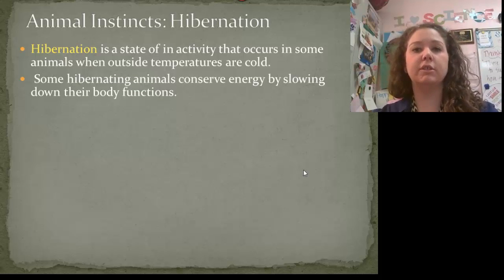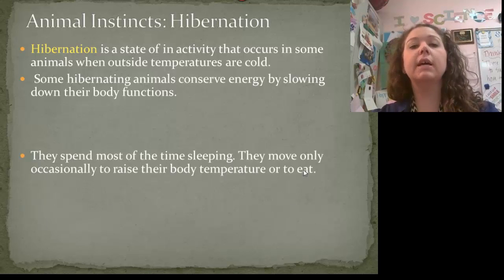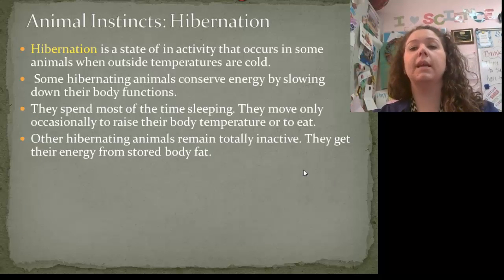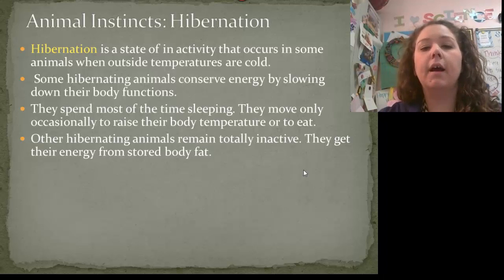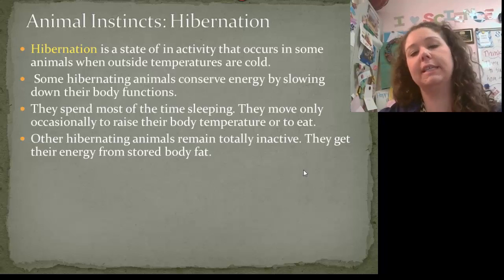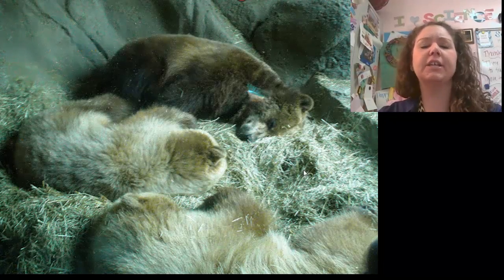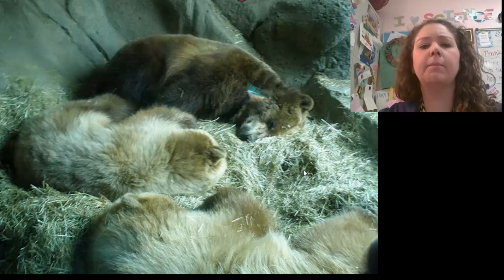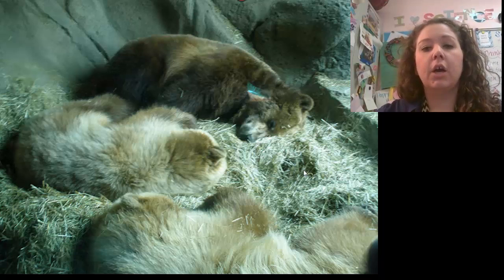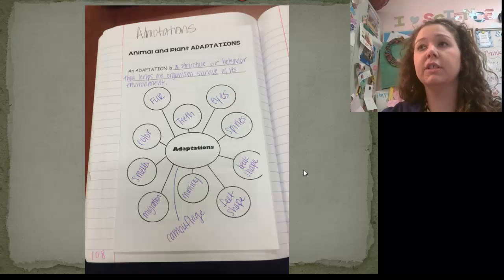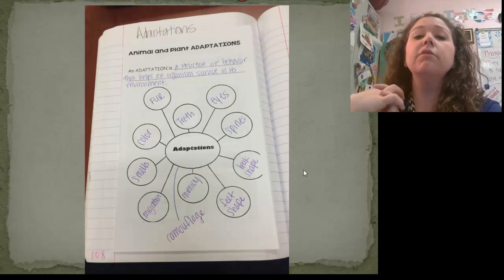The next behavioral adaptation is hibernation. Bears are a familiar example — when temperatures are really cold outside, they hibernate, which allows them to conserve energy and survive. Make sure you wrote down migration and hibernation in the bubbles. If you run out of bubbles, just add a little line. Here's a picture of bears hibernating — they're storing up energy so that when winter is done, they have all the energy they need to survive.